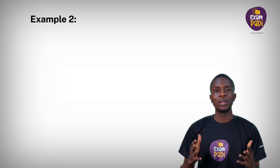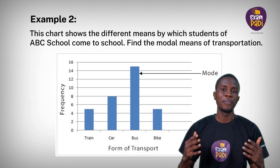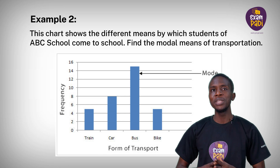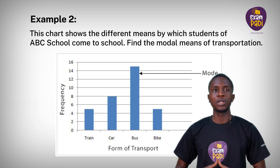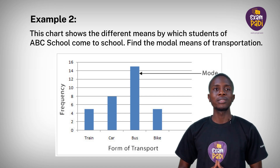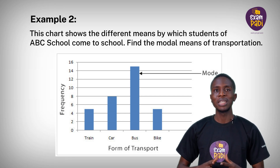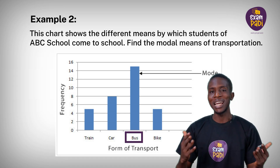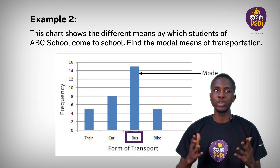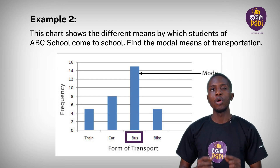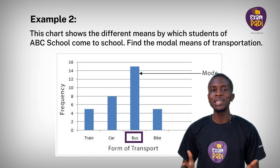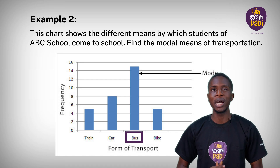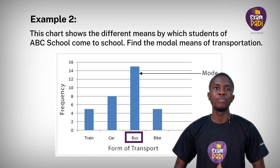Example 2: This chart shows the different means by which students of ABC school come to school. Find the modal means of transportation. It is clear from this chart that the most common form of transport in this particular data set is the bus, because it has the highest frequency. However, one of the problems with the mode is that it is not unique — so when a set of data has two most occurring items, you pick both items.